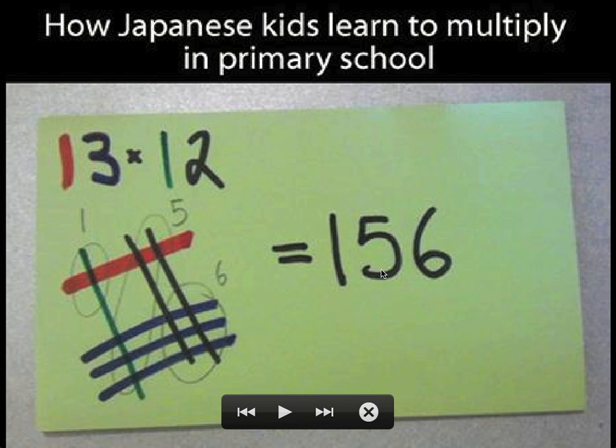So very simply, you have one crossing in the hundreds column. That's this one right here. You have two crossings in the tens column here, plus another three down here, making a total of five crossings. And then you have six crossings here. So that's indeed the correct answer.